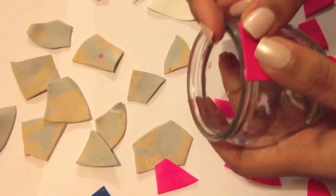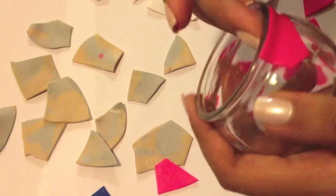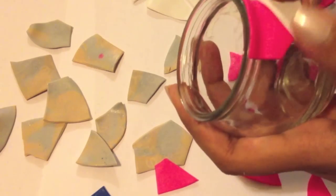When you have finished cutting them out, start sticking them onto your glass pot. It doesn't matter if you overlap them or if there are any gaps.